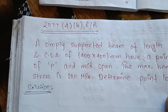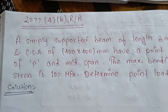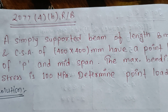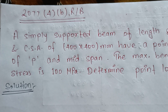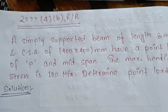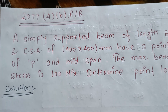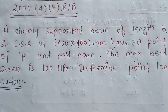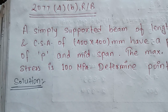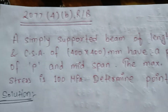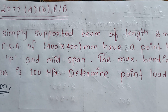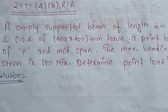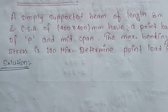So this is the question: a simply supported beam of length 8 meters, that is 8,000 mm. The cross-section area is B into D, which is 400 into 400 mm. There is a point load, and the maximum bending stress is 100 MPa. Find the point load.